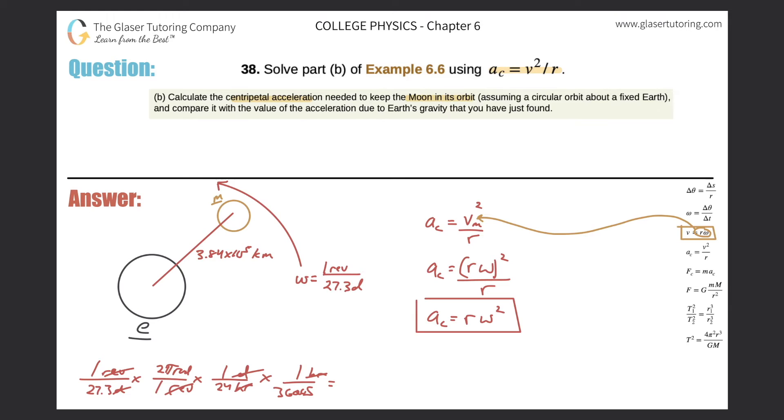And voila, we have radians per second. So it's just 2 pi divided by parenthesis, 27.3 times 24 times 3,600. So 2.66, 2.66 times 10 to the minus 6. And that, remember, is in radians per second. So this is your angular velocity.